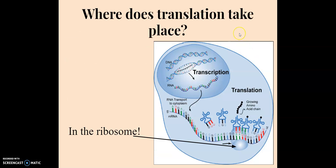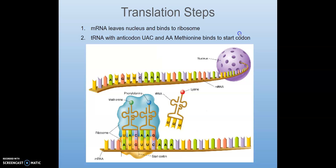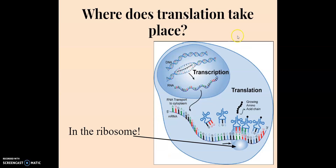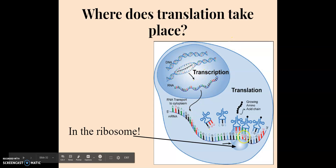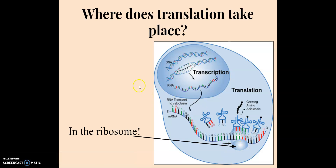So where does translation take place? Translation takes place in the ribosome. Transcription happened in the nucleus; translation is happening directly at the ribosome.